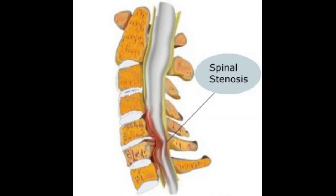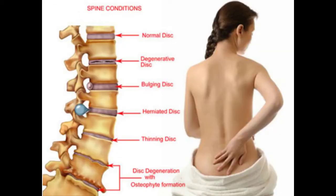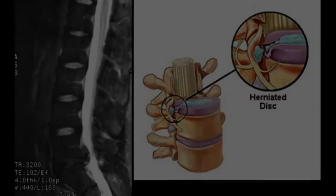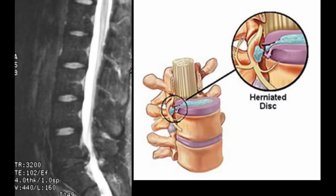Spinal stenosis — the abnormal narrowing of a passage — can lead to several conditions that may require treatment. These can include herniated disc, bulging disc, degenerative disc disease, arthritis, spondylolisthesis, and malalignment.